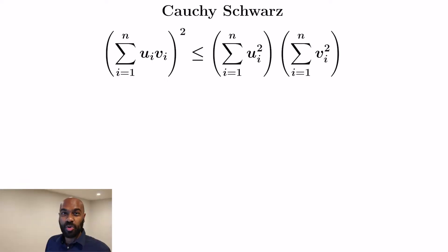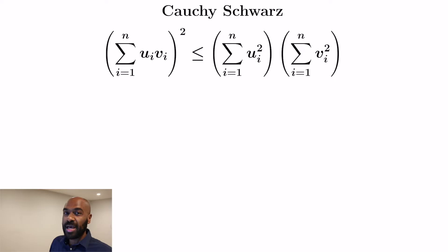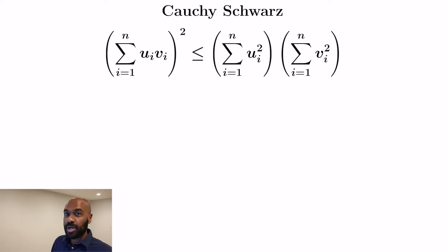Today we're going to look at the Cauchy-Schwarz inequality and various applications of it, including a problem from the International Math Olympiad. The Cauchy-Schwarz inequality says that if you have real numbers U_i and V_i, then the sum of the products U_i·V_i, all squared, is less than or equal to the sum of the U_i's all squared times the sum of the V_i's all squared.